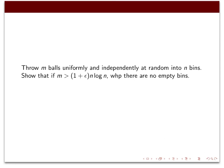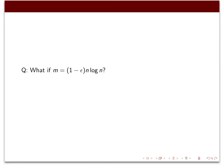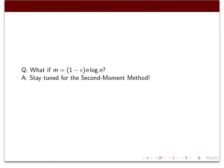A natural question: what if m equals (1−ε) n log n? Then the expected number of empty bins is n^ε, which tends to infinity. You might want to conclude that therefore there's at least one empty bin with high probability — but the answer is no, you can't immediately conclude that from the first moment method alone. In some cases you can, but you'll need to stay tuned for the second moment method in the next video.